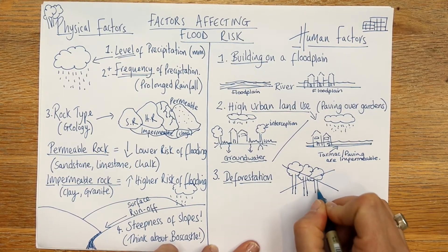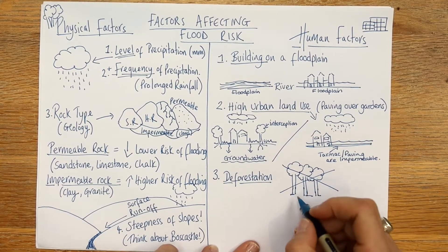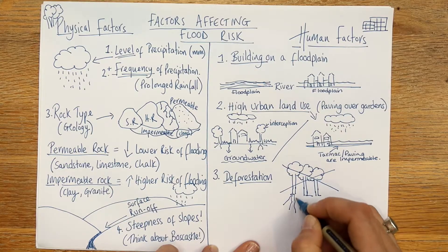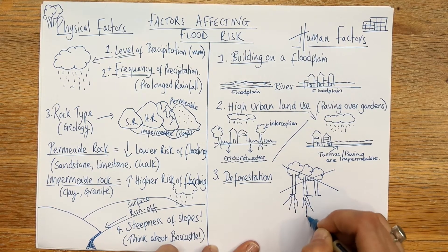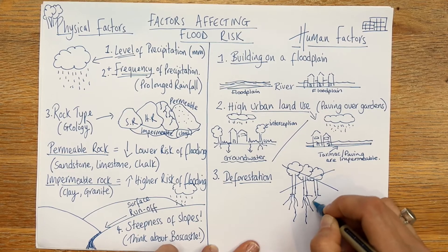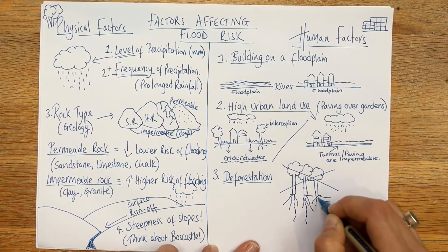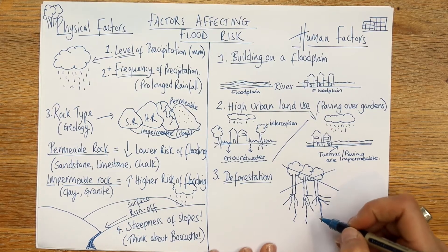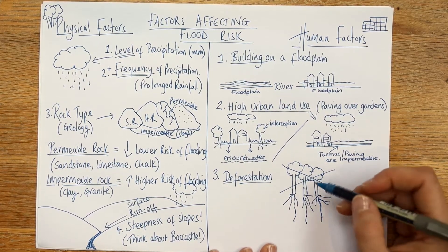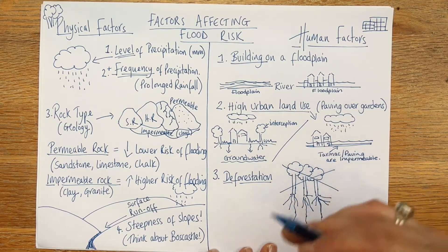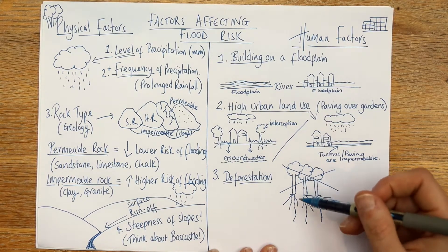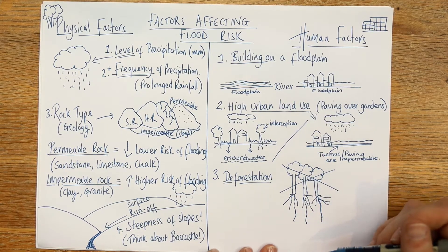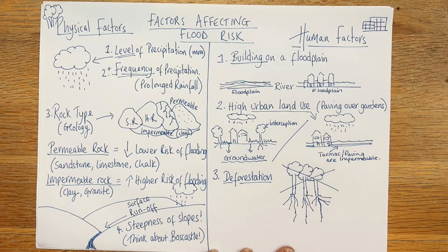Trees are amazing. They have a lot going on beneath the ground — a long tap root that goes really deep, plus lots of other roots. They are as big under the ground as they are above. A giant tree with huge branches and lots of leaves has just as much going on underneath in roots.